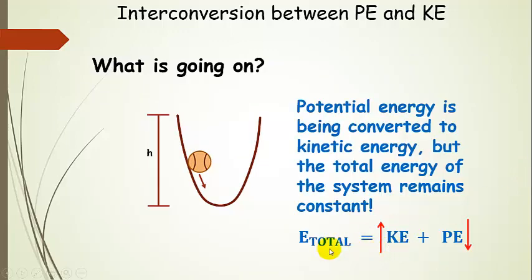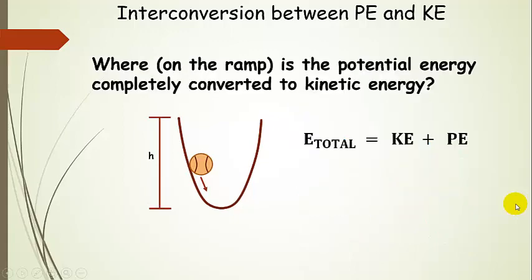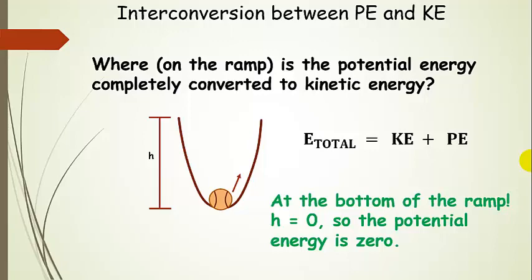Kinetic energy is increasing and potential energy is decreasing as the ball gets lower and lower on the ramp — less height. Where on the ramp is potential energy completely converted to kinetic energy? At the bottom of the ramp, where the height is zero, the potential energy is zero. We can visualize that if we let go of the ball, it's going to be moving, so at the bottom of the ramp, that's all kinetic energy.